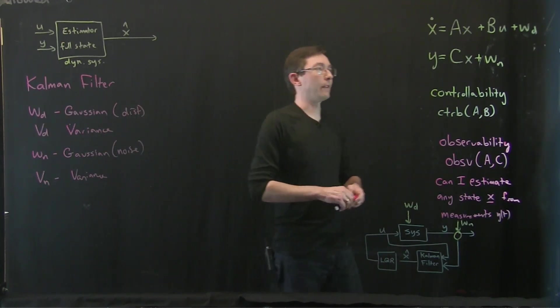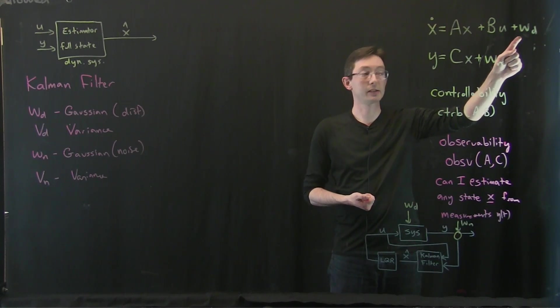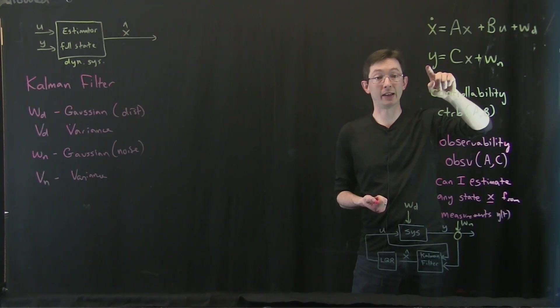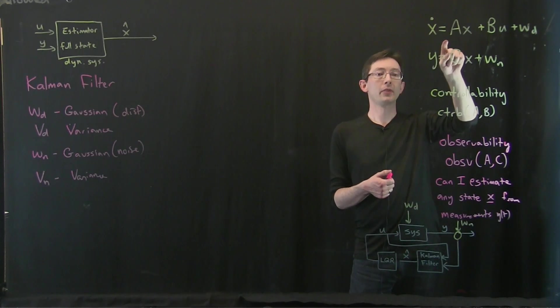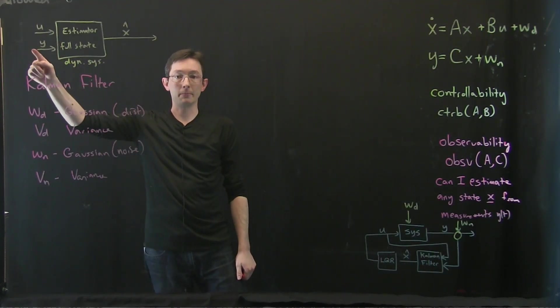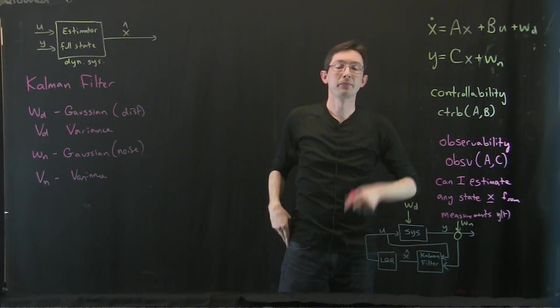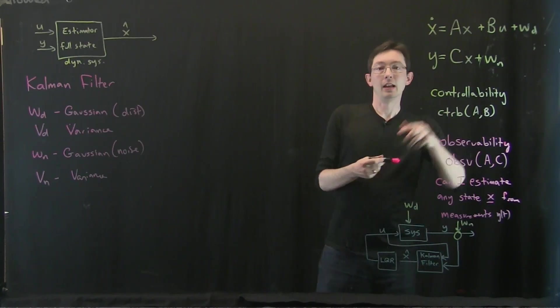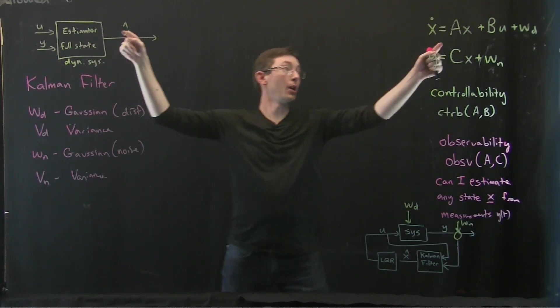Basically, if I think that my process noise, the kicks that my system is going to experience, are larger or smaller than the noise that my measurement has, then I get to trust one or the other more. My Kalman filter is measuring U and Y, and it has a model of A, B and C, but if it has really bad sensor noise, it can't trust Y very much.